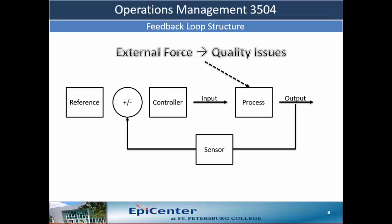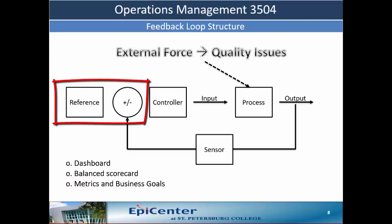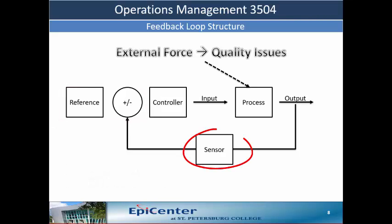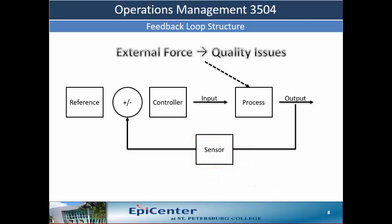Product quality issues are external forces, and unless remedied, can cause decline in customer satisfaction and potential lost revenue. The reference point and monitor are associated with dashboards or balanced scorecards reflecting metrics and business goals. The system sensor is a statistical process control chart put in place to understand the variability of the output of the system. Finally, the controller is made up of problem solving methods such as DMAIC and process improvement methods such as Lean, Six Sigma, and the science of improvement.